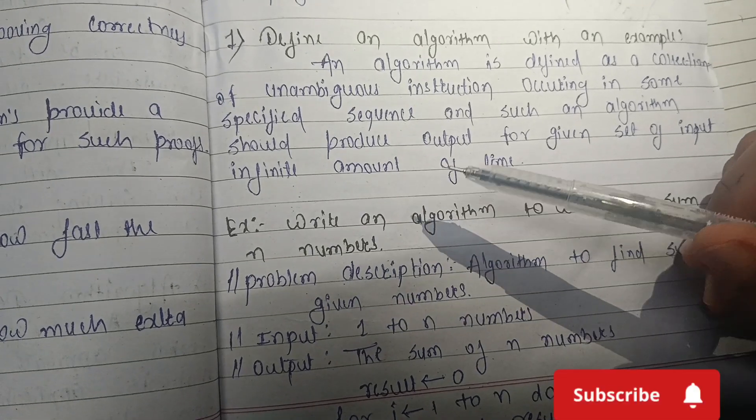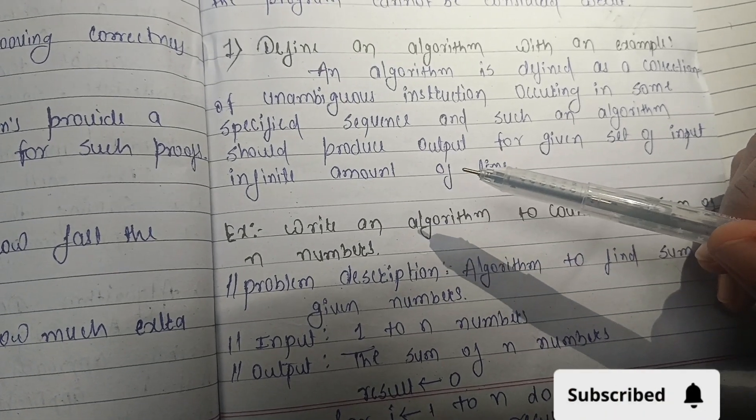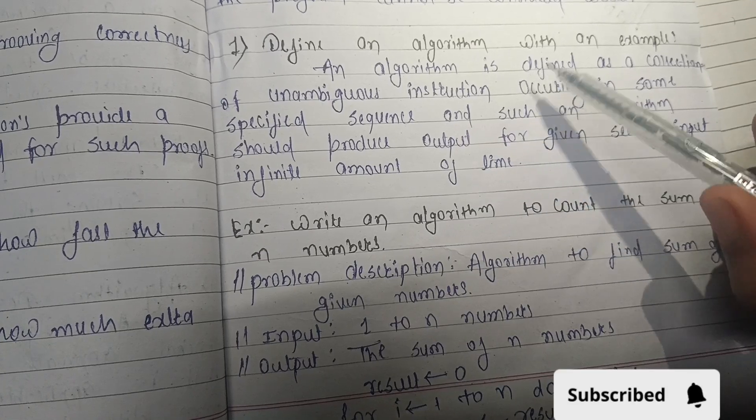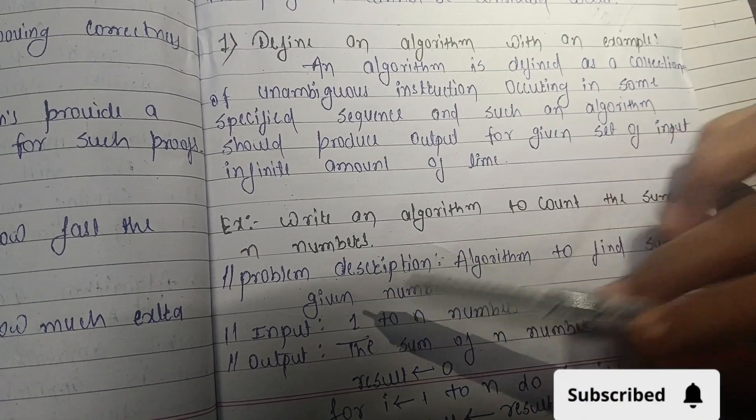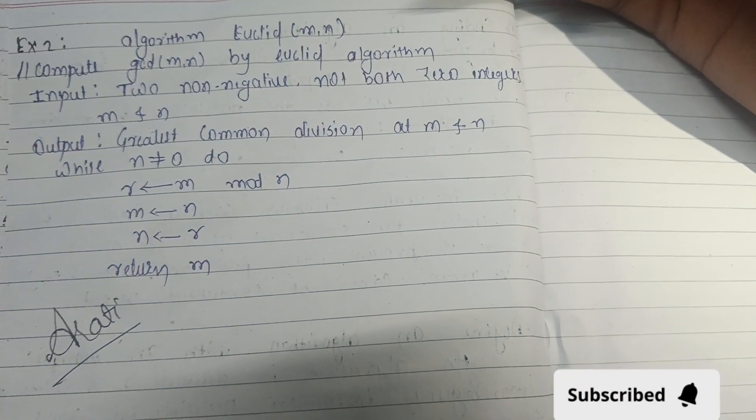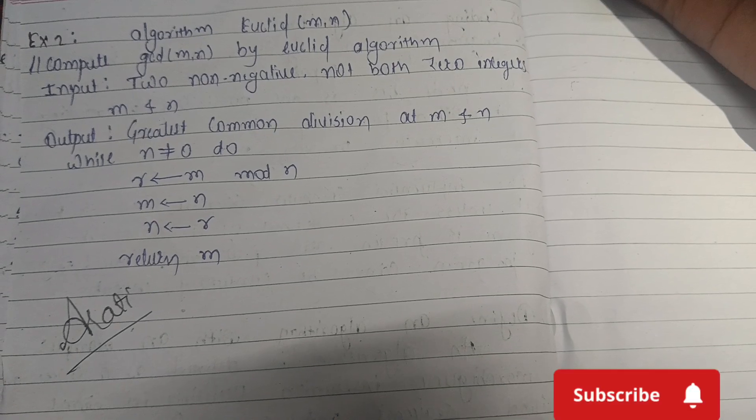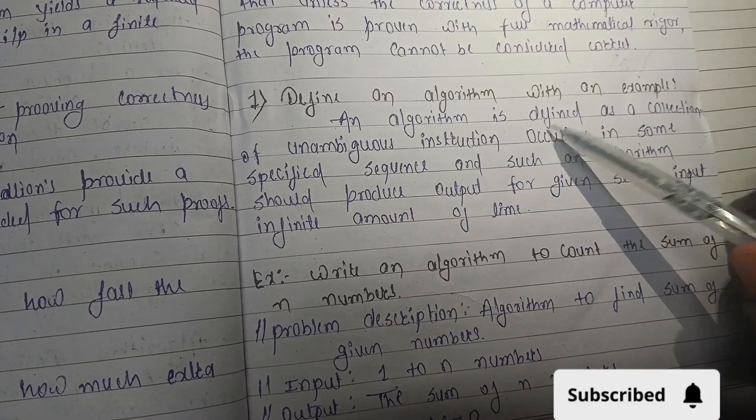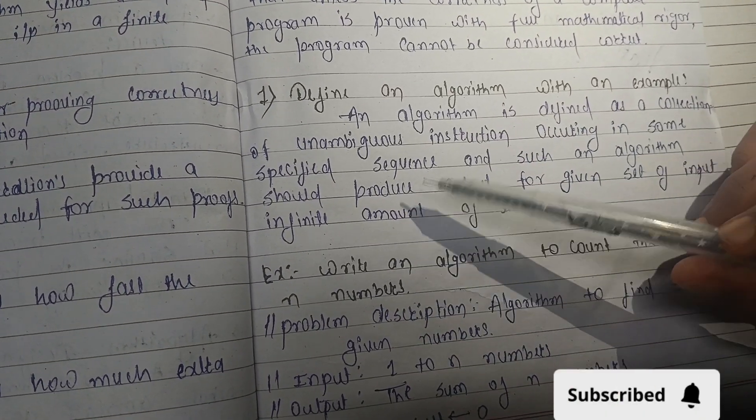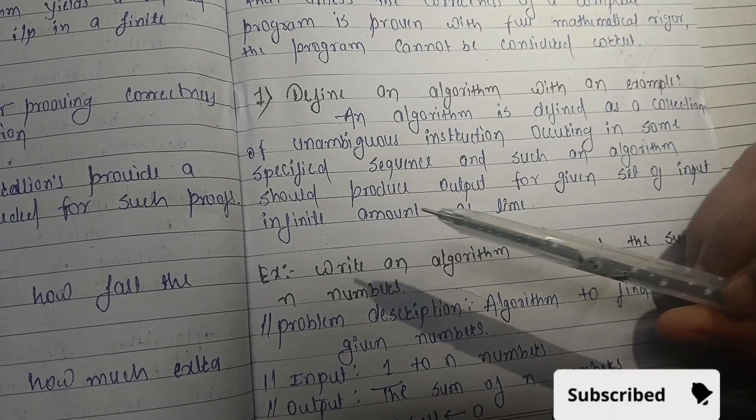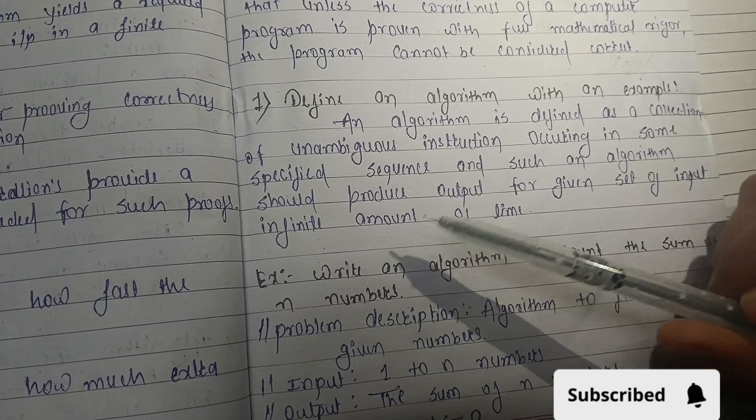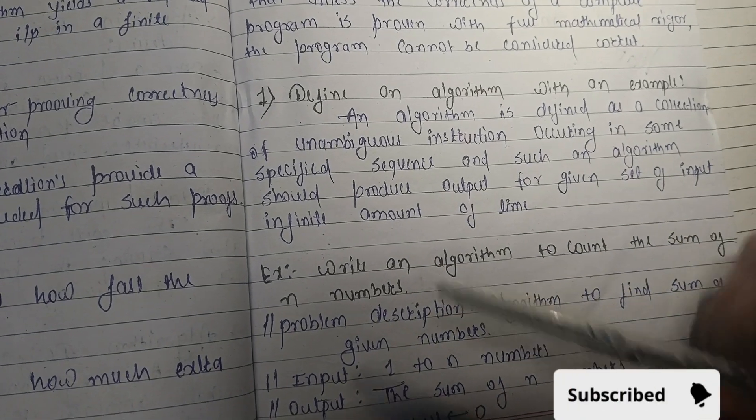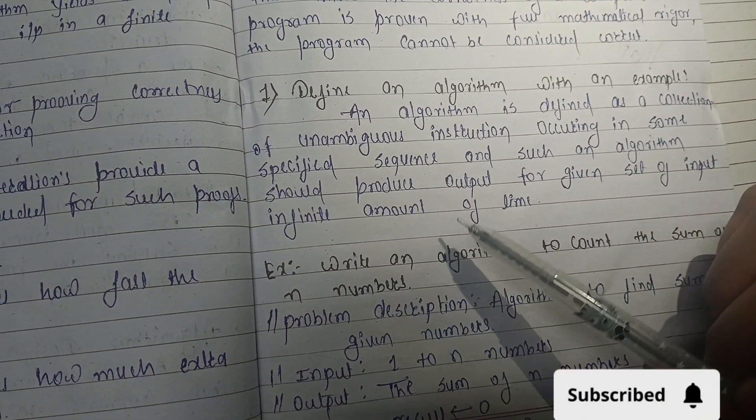First question is: define algorithm with an example. An algorithm is defined as a collection of unambiguous instructions occurring in some specified sequence, and such an algorithm should produce output for a given set of input in finite amount of time.